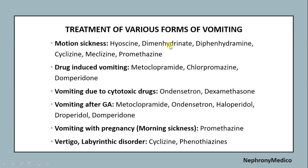For treatment of specific forms of vomiting: in motion sickness, hyoscine, dimenhydrinate, and diphenhydramine are used. For drug-induced vomiting, metoclopramide is used. For vomiting due to cytotoxic drugs, ondansetron is used. For vomiting after general anesthesia, metoclopramide, ondansetron, and haloperidol are used. For vomiting in pregnancy, promethazine is used. For vertigo and labyrinthine disorders, cyclizine and phenothiazines are used.